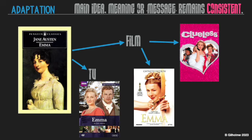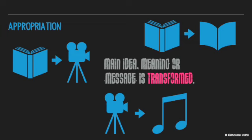Comparing that to appropriation — again, you can have something appropriated from novel to film, novel to graphic novel, film to musical, or even from novel to novel within the same medium. But what's important is that the main idea, meaning, or message is actually transformed. The composer is not worried about maintaining what the original composer was trying to communicate — they're basically using that original text for their own purpose, to communicate their own ideas.